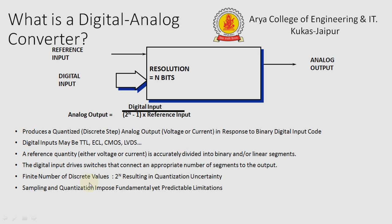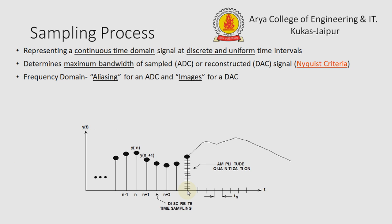Sampling and quantization impose fundamental yet predictable limitations. The sampling process represents a continuous time-domain signal into discrete, uniform time intervals. As we can see here, the analog signal is sampled at uniform time intervals. Sampling determines the maximum bandwidth of the sampled ADC or reconstructed DAC signal, which falls under the Nyquist criteria.